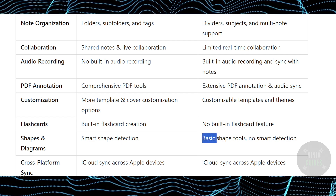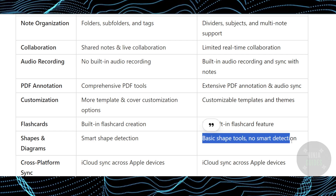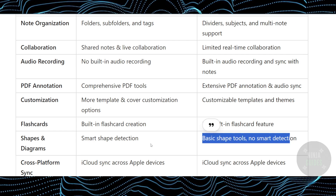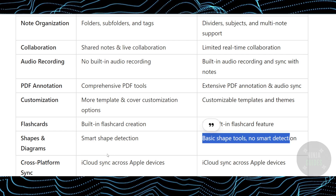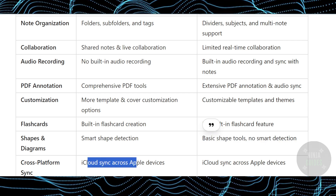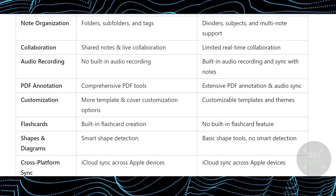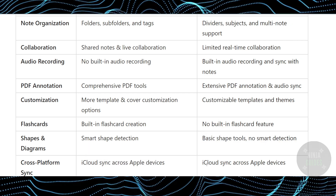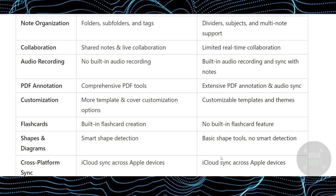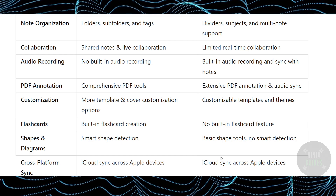Notability gives you basic shape tools with no smart detection. For cross-platform sync, both GoodNotes 6 and Notability offer iCloud sync across Apple devices.